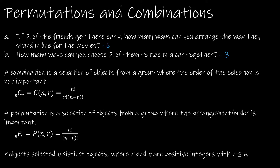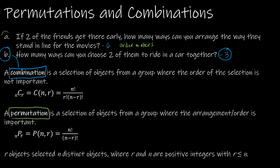Permutations and combinations have everything to do with whether or not order matters. Order matters is a permutation, and order doesn't matter is a combination. Let's use these formulas to find our solutions of six and three. We'll start with the combination, since question B was where order doesn't matter.